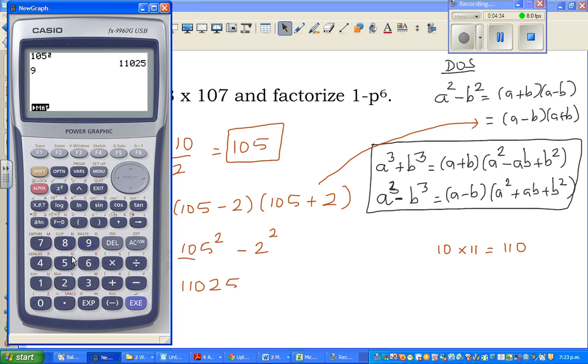Suppose if it is 95 squared, I know 9 times 10 is 90, so it would be 9,025. 95 squared is 9,000, so look at the pattern. So if it is 85 squared, it is 7,225. Now 72 is 8 times 9. If it is say 65 squared, I know 6 times 7 is 42, so it would be 4,225.